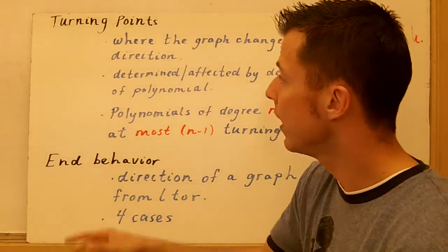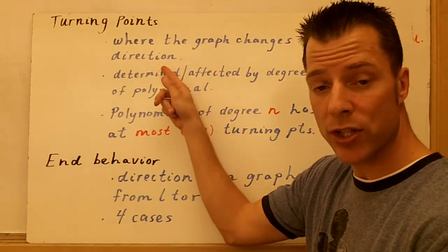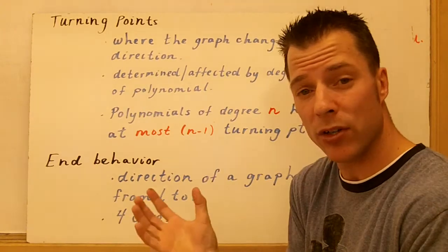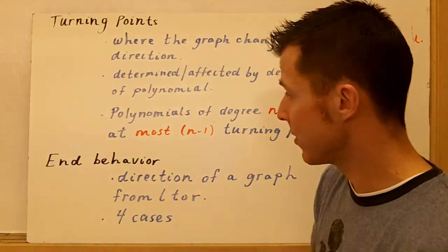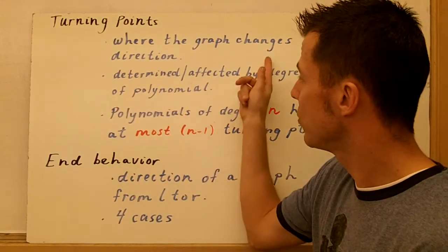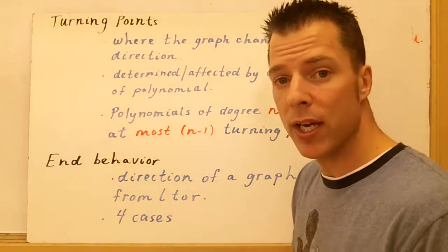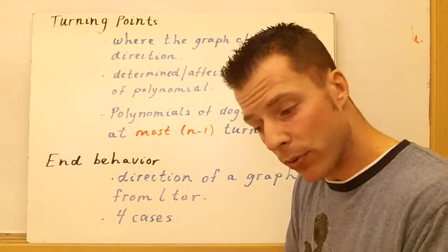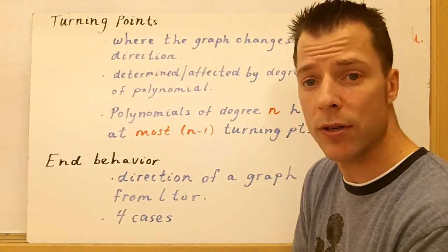A couple things. Turning points. The turning points of a graph are where the graph changes direction. You'll look at it later on, you'll learn about concavity. Or near our relative maxes or mins. So it's where the graph changes direction, and if you think about a quadratic, the first time we saw that was at the vertex, where the parabola changes direction. So that's kind of what you're looking for, what you're going to see with a turning point.